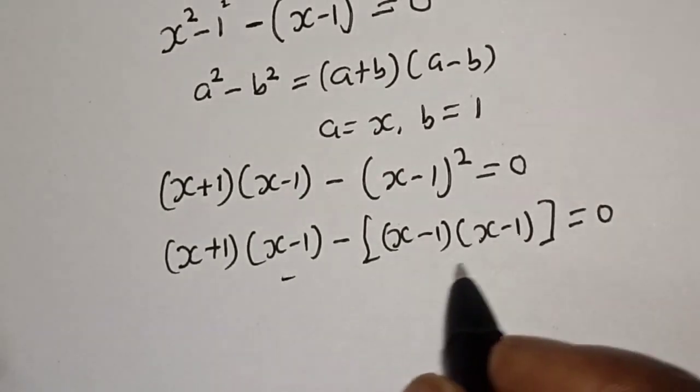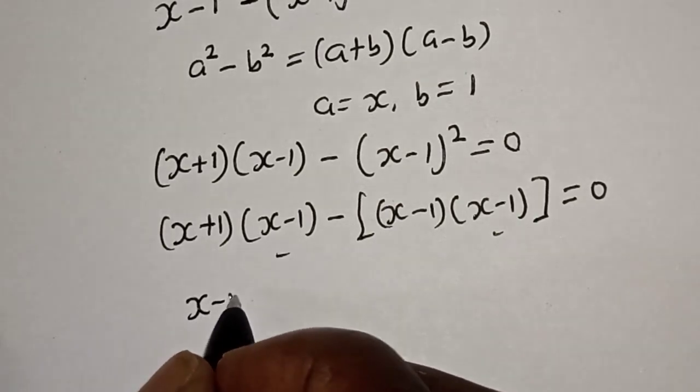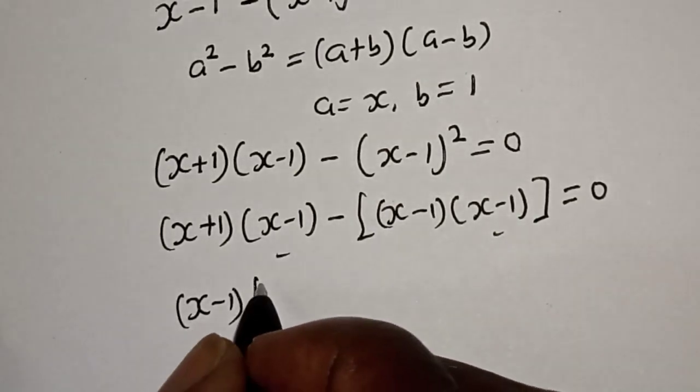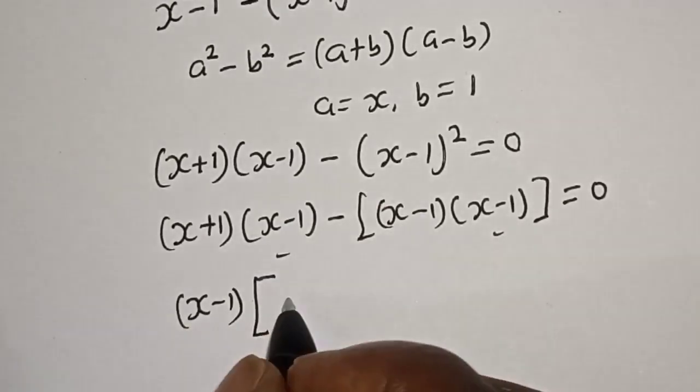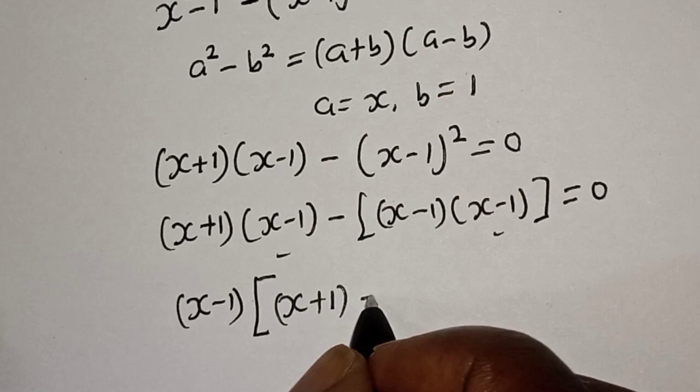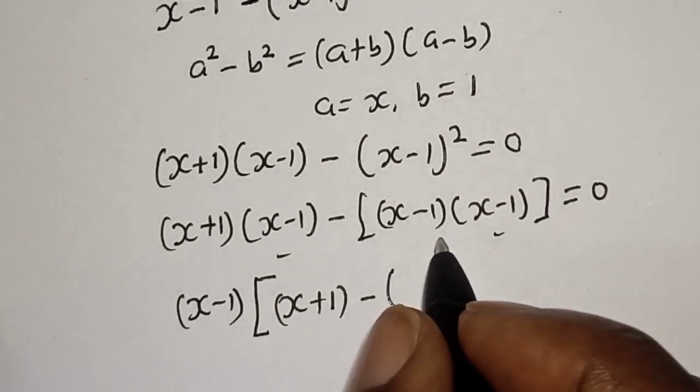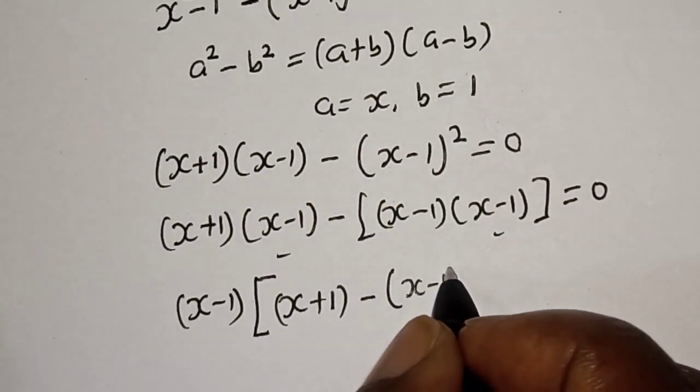So we can see that (x minus 1) is common here. Let's bring it out. So we have (x minus 1) multiplied by... if you divide this by this, we have (x plus 1) minus. Here if you divide this by this, we have (x minus 1).